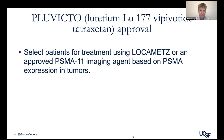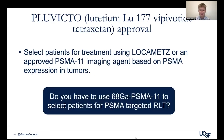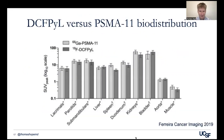One comment about patient selection with Pluvicto: the package insert says that patients should be selected using Locametz or an approved PSMA-11 imaging agent, and that DCFPyL should not be used — which is sort of odd. I believe you do not have to use PSMA-11, and it's important for patient access. Not every patient has access to PSMA-11, and we need to allow patients to be imaged with DCFPyL or piflufolastat so they have access to lutetium-based PSMA radioligand therapy. Data shows the liver uptake is nearly identical between PSMA-11 and DCFPyL, so they should function nearly identically for patient selection.